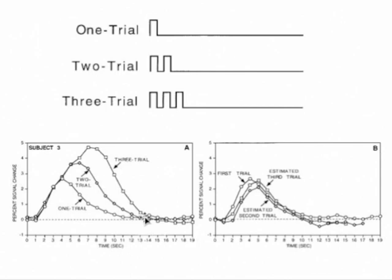What's really interesting is to look at the response to the two-trial condition. Recall there was an event, fixation, and then a second discrete event. Yet when we look at the fMRI response, there is no evidence from visual inspection that there were two discrete events that gave rise to this response. Rather, we have a single slowly building, smeared-out response. It peaks at a later time than did the one-trial event and also at a higher level — around three and a half percent signal change, whereas with the one-trial condition we were below three percent signal change.